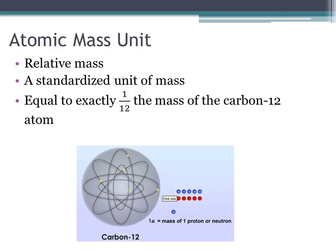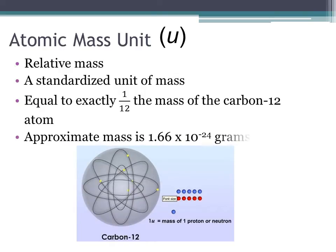A single atom of a nuclide of carbon-12 is arbitrarily assigned a mass of exactly 12 atomic mass units. The atomic mass unit is symbolized by the letter U. One atomic mass unit, or one U, is exactly one-twelfth the mass of a carbon-12 atom, or approximately 1.66 times 10 to the minus 24 grams. The atomic mass of carbon-12 is exactly 12 U.